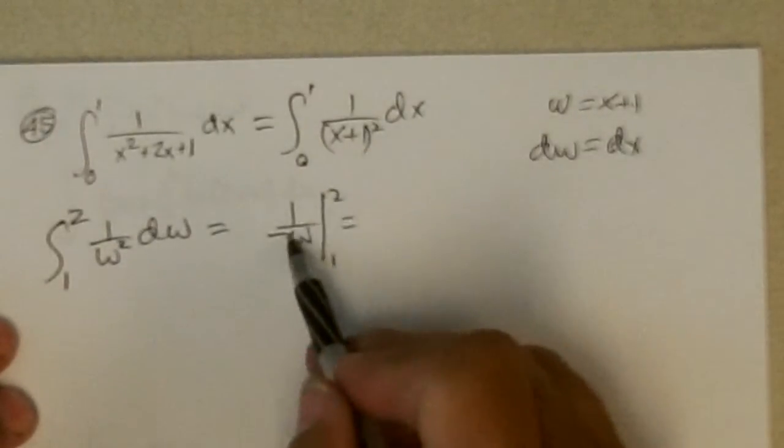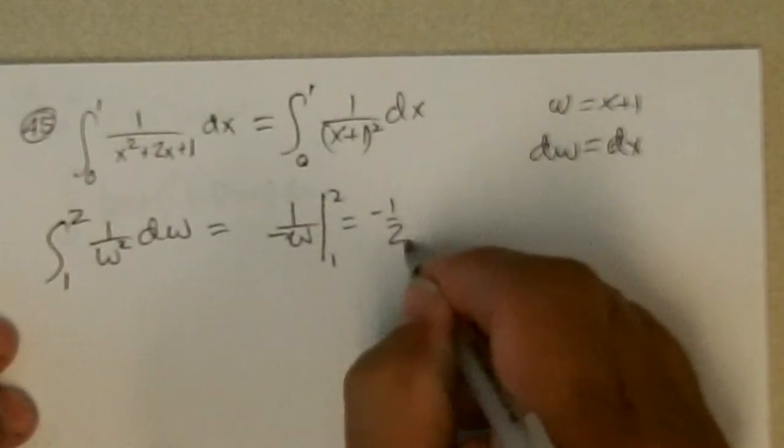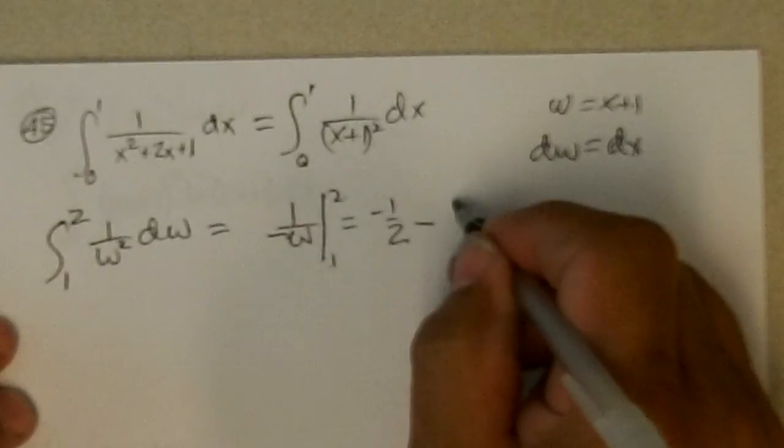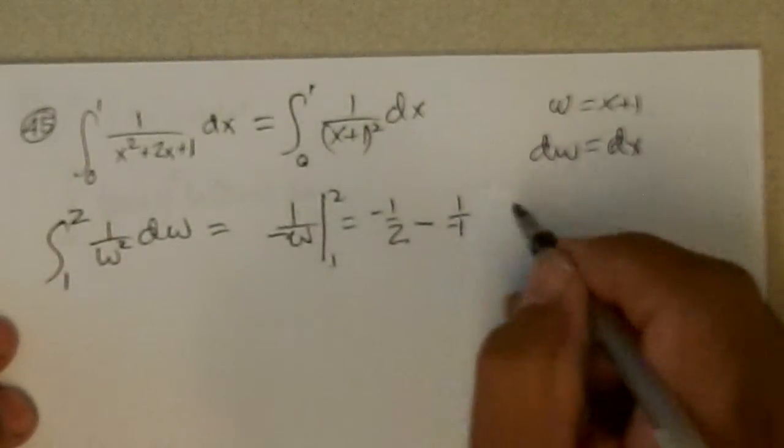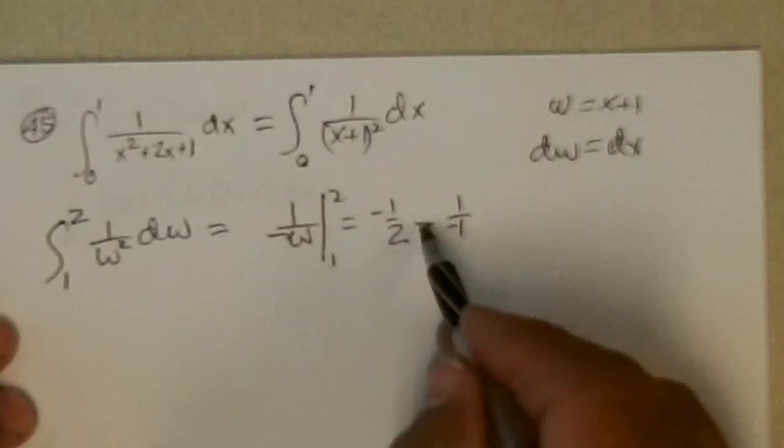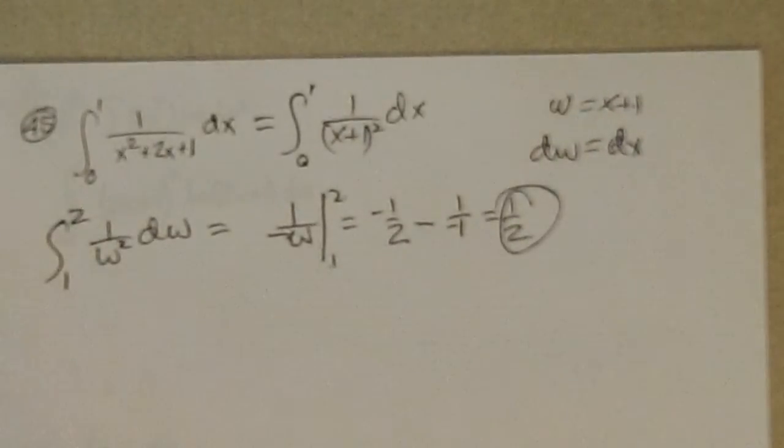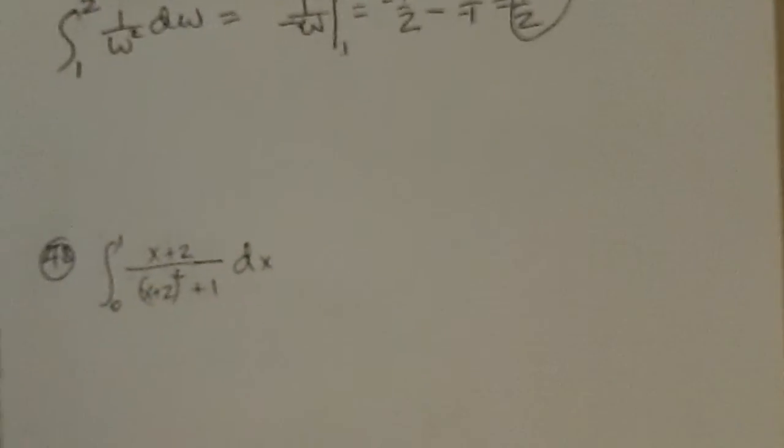Which is minus 1 half, subtract 1, and there's 1 over minus 1, so that's 1 minus 1 half, because that becomes plus 1, which is 1 half. Didn't need the table.